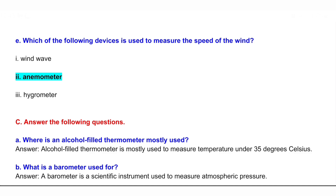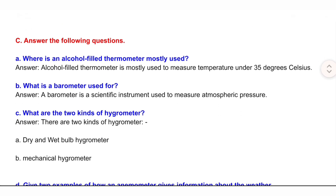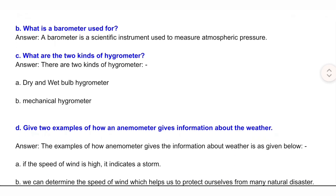C: Answer the following questions. A: Where is an alcohol-filled thermometer mostly used? Answer: An alcohol-filled thermometer is mostly used to measure temperature under 35 degrees Celsius. B: What is a barometer used for? Answer: A barometer is a scientific instrument used to measure atmospheric pressure.